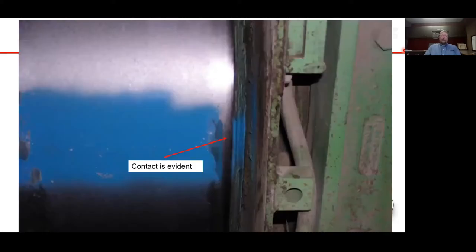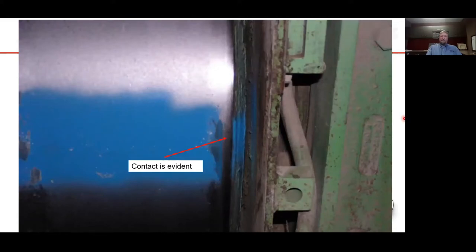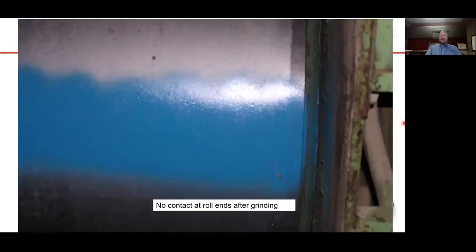When we grind the rolls, we paint a stripe along the ends and touch them together — where the paint is rubbed off is where it needs to be ground. Here you can see that the end is a high spot and needs to be relieved. We go ahead and grind the roll, paint another stripe, touch the rolls together, and you can see that it's been sufficiently relieved.